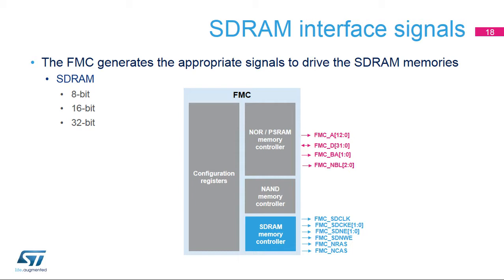The SDRAM controller's dedicated signals include: SDCLK (SDRAM clock), SDCKE0 (SDRAM bank 1 clock enable), SDCKE1 (SDRAM bank 2 clock enable), SDNE0 (SDRAM bank 1 chip enable), SDNE1 (SDRAM bank 2 chip enable), NRAS (row address strobe), NCAS (column address strobe), and SDNWEN (write enable).